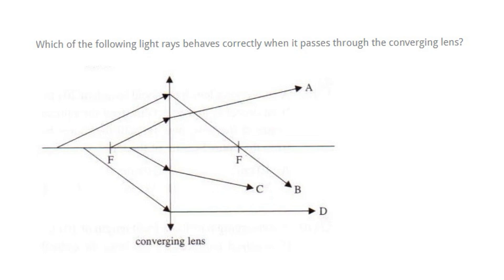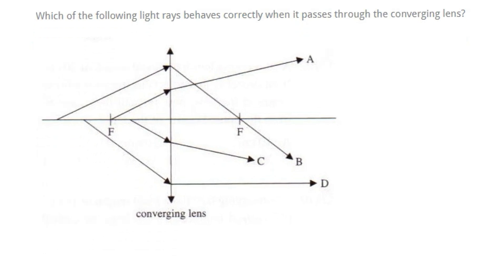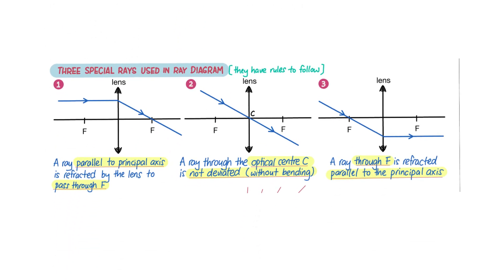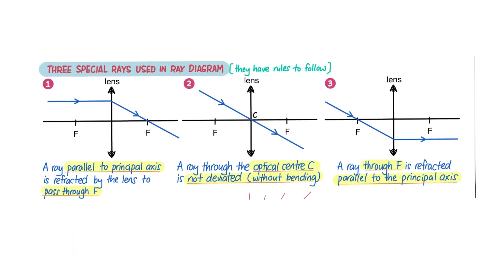Now to solve this I need to bring your attention back to the basics. If you can refer to the notes, you know that these three rays are very important because they have rules to follow. That's why when we draw lens diagrams we always stick to these three rays first to locate the position of the image.